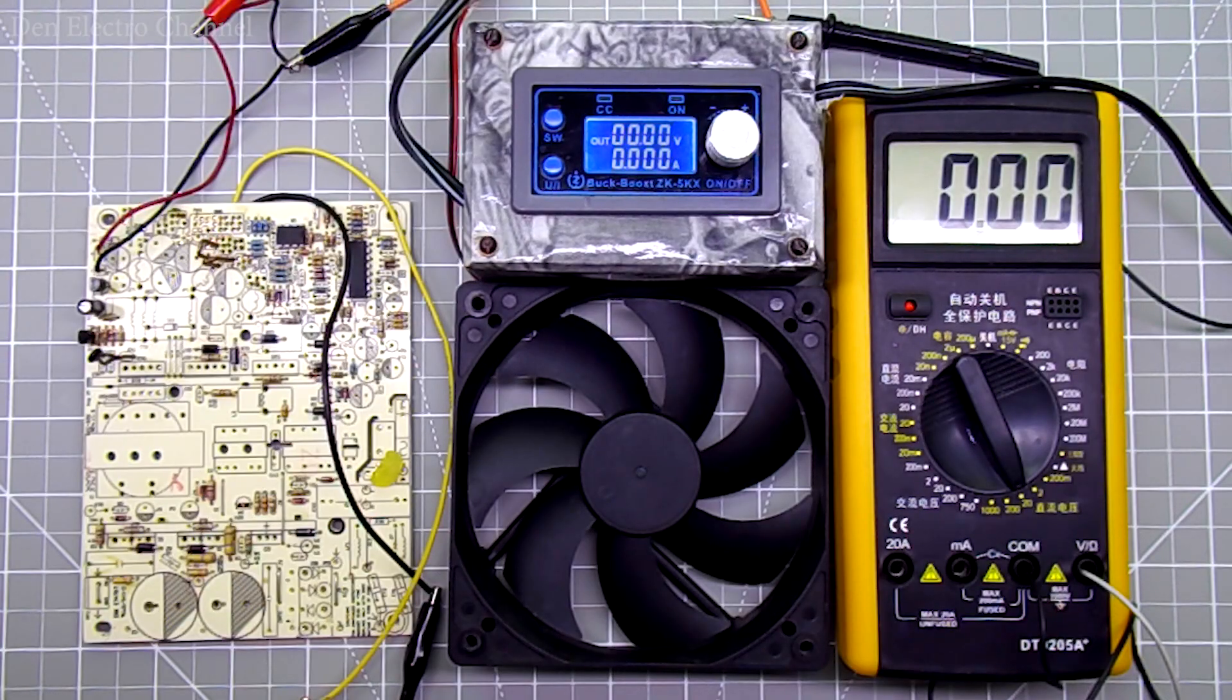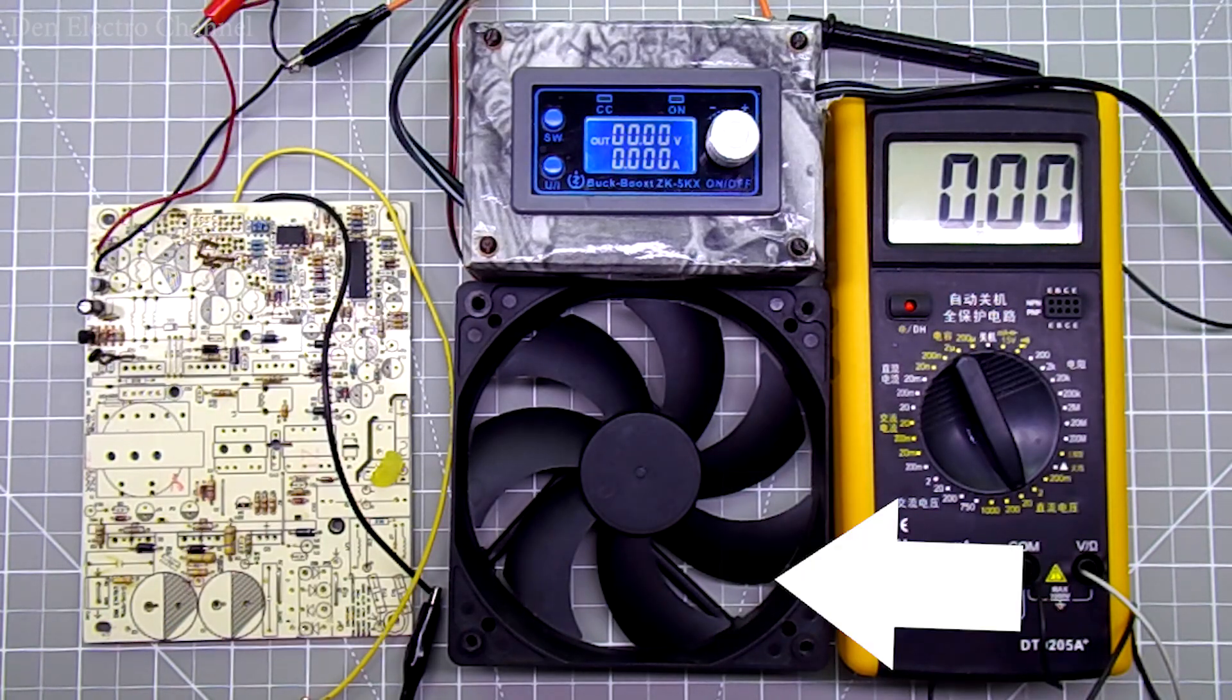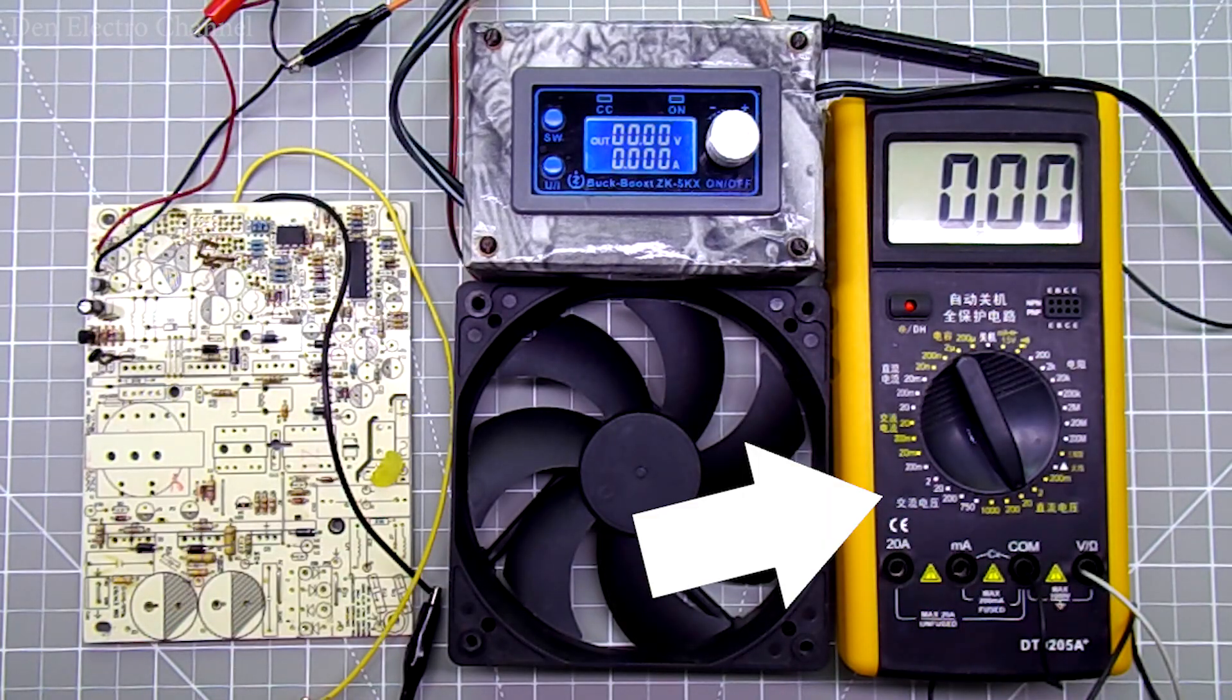Now let's see how it works. The circuit will be powered by this converter, I will supply 12 volts from it. This large cooler is connected to the output of the circuit. In fact it was in this power supply. A multimeter is connected in parallel to this cooler, it will show what voltage is currently going to this fan.